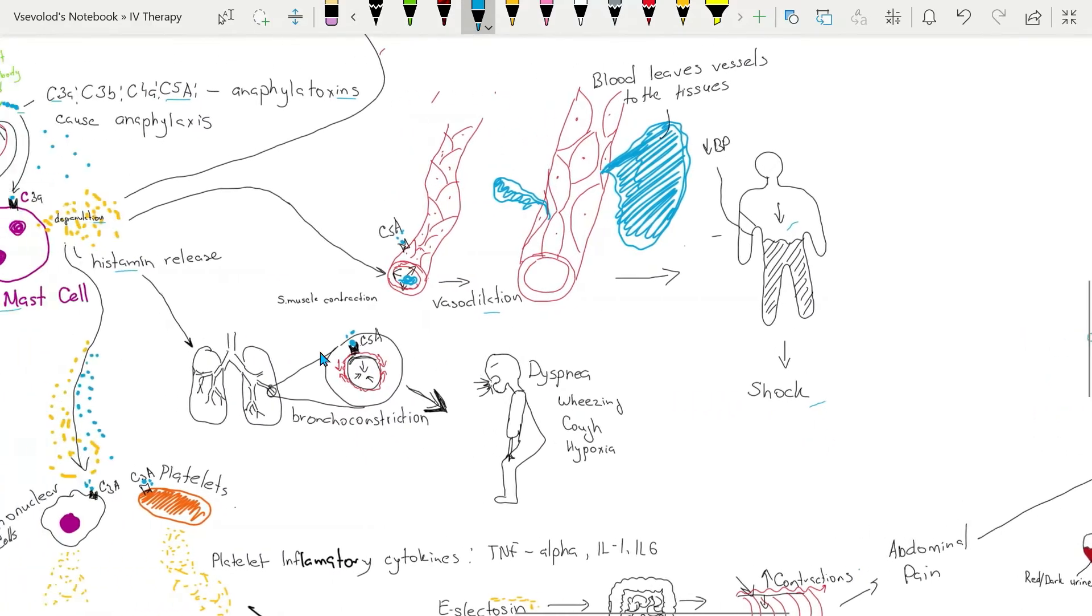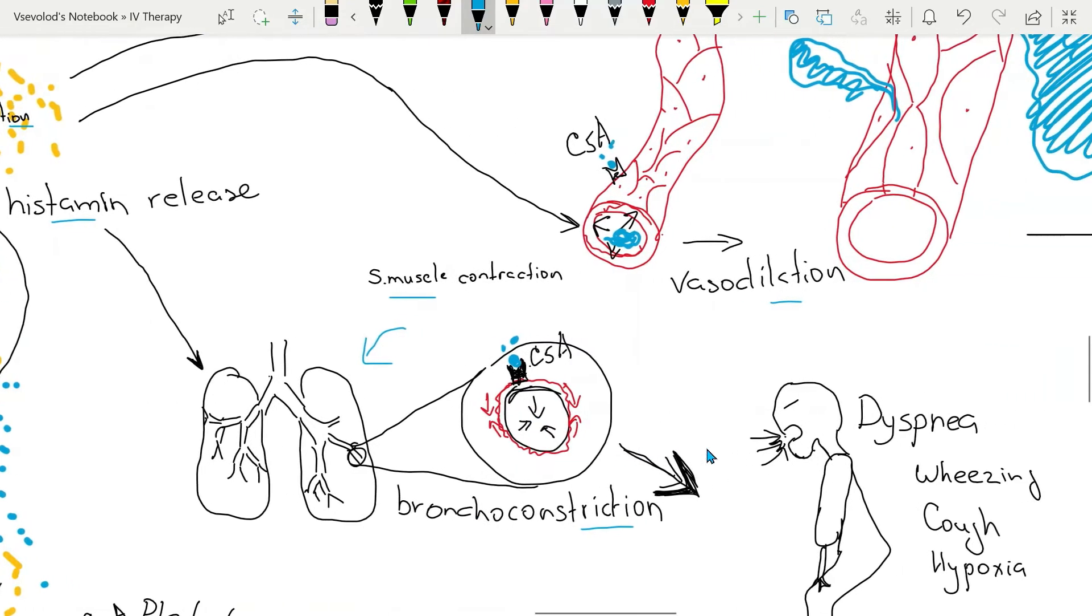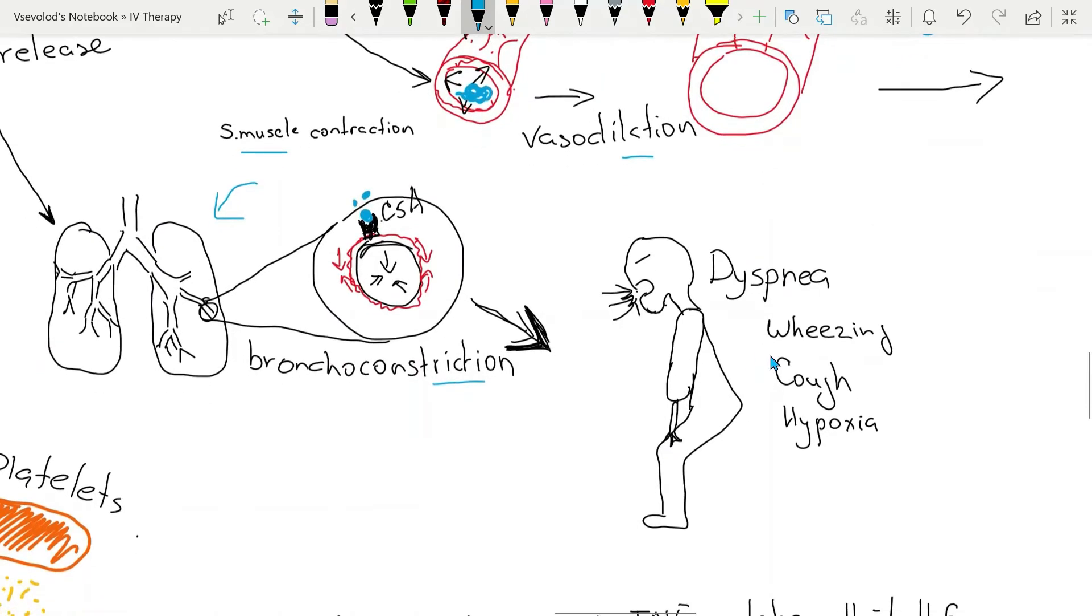Histamine also will cause smooth muscle contraction in the lungs, which will lead to bronchoconstriction. Bronchoconstriction will lead to difficulty breathing, wheezing, cough, and hypoxia.